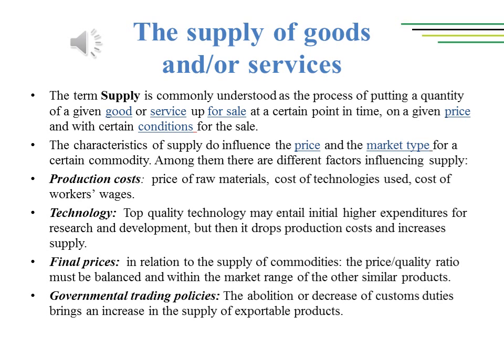For instance: 1. The production costs — price of raw materials, cost of technologies used, cost of workers' wages. 2. Technology — top quality technology may entail initial higher expenditures for research and development, but then it drops production costs and increases supply. 3. The prices. 4. Governmental policies — the abolition or decrease of customs duties brings an increase in the supply of exportable products.